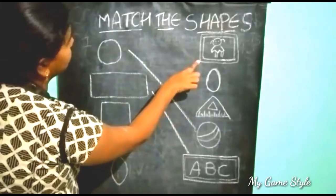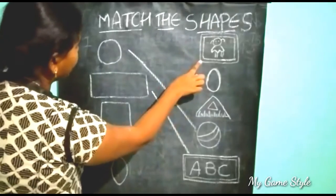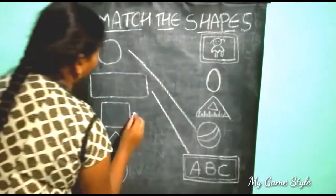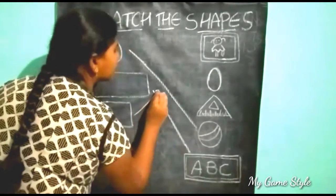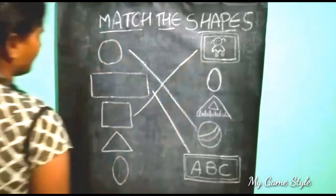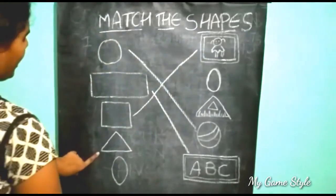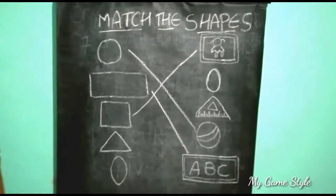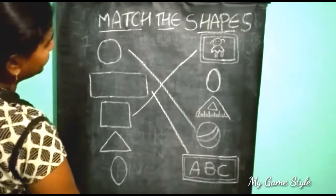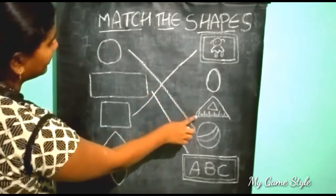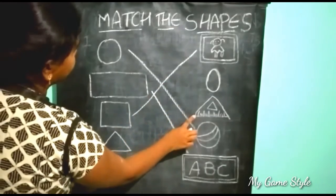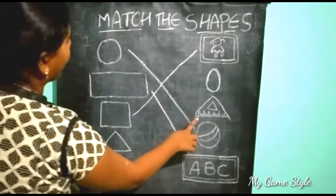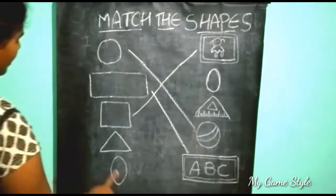This is a Frame. Frame is similar to Square, so we need to match this. Next shape is Triangle — which is similar to this? This is a Triangle Scale. Triangle Scale is similar to Triangle.